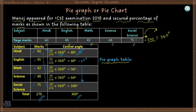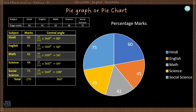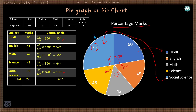Distribute the 360 degrees as follows: 75 marks corresponds to an angle of 100 degrees, 60 marks corresponds to 80 degrees, 48 marks corresponds to 64 degrees, 42 marks corresponds to 56 degrees, and 45 marks corresponds to 60 degrees. For each slice we can use a different color — for example, one color for social science. This way, based on the proportionate angles, we can complete one pie graph or pie chart.